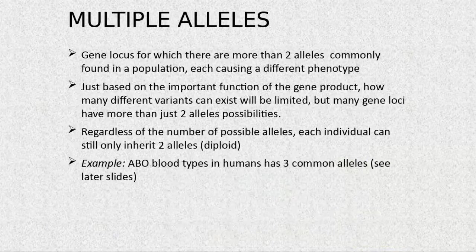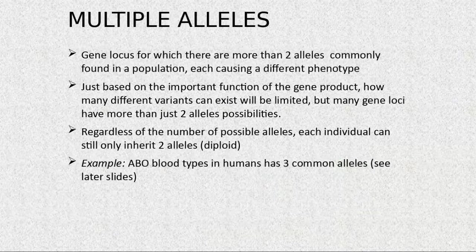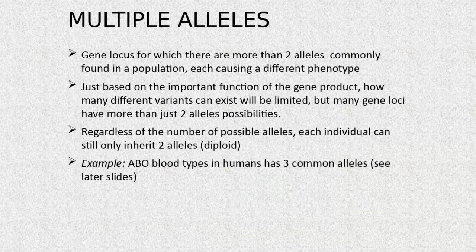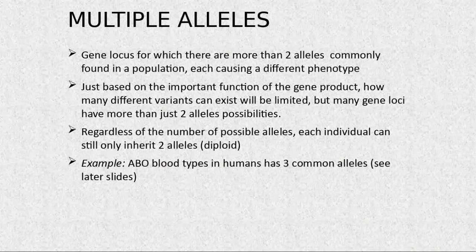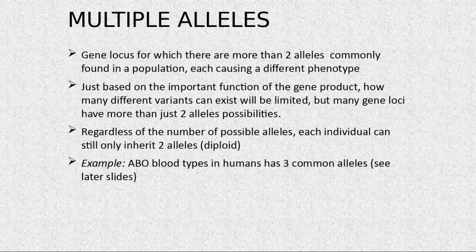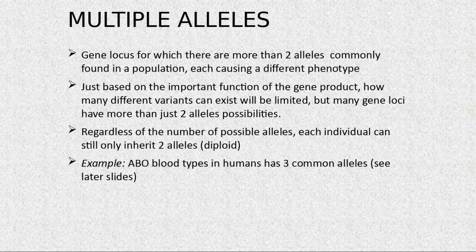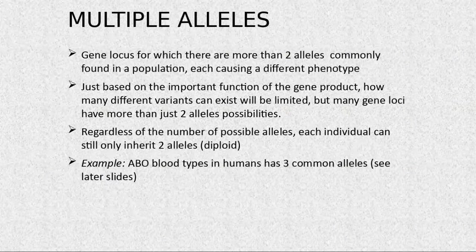The gene locus for which there are more than two alleles commonly found in a population, each causing a different phenotype — this is multiple allelism. Regardless of how many alleles exist in the population, each individual can still only inherit two alleles because we are diploid organisms. An example is blood type — humans have three common alleles: A, B, and O.